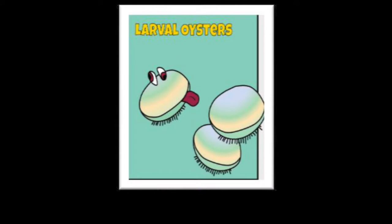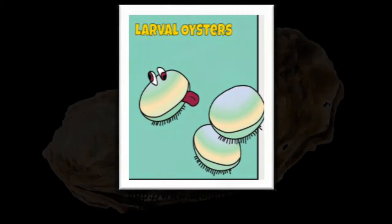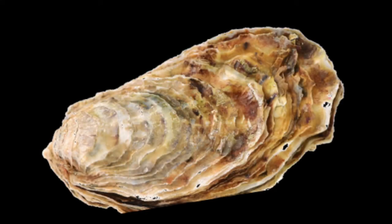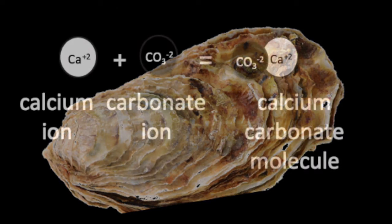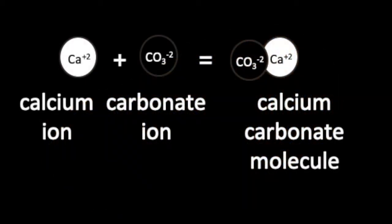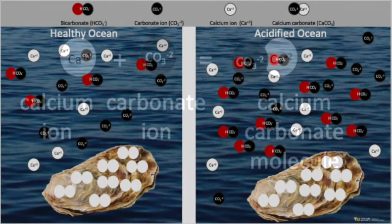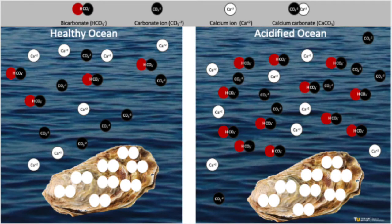You will be taking on the role of a baby oyster, which we call an oyster larva, that needs to build its shell. Oyster larvae build their shell by combining calcium ions with carbonate ions to create a calcium carbonate molecule. In the carbonate model challenge, you're going to find out what it's like to be an oyster larva trying to build its shell in a healthy ocean and one that is acidified.